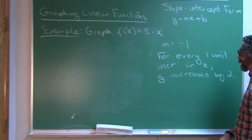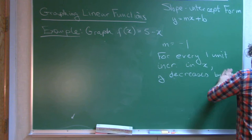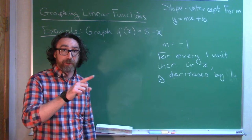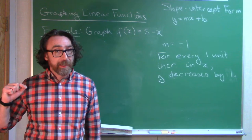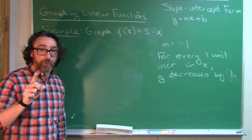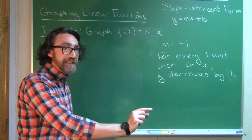So for every 1 unit increase in x, y would decrease by 1 unit. If the slope is positive, increasing the x value leads to an increase in the y value. If the slope is negative, increasing the x value leads to a decrease in the y value.